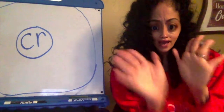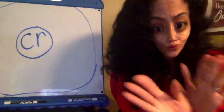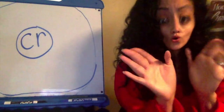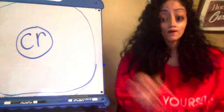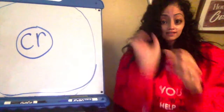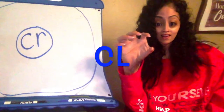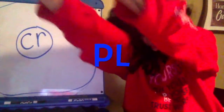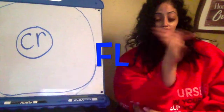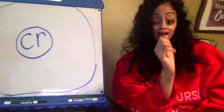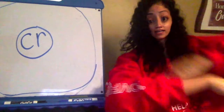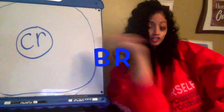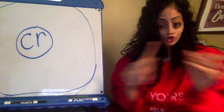But first we have to go over the blends we've learned before. Let's start. Black, claw, pulling, flag, fly, brush. And today we are learning about CR.